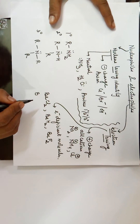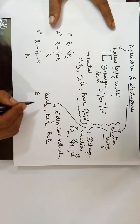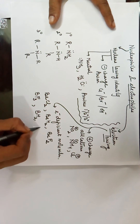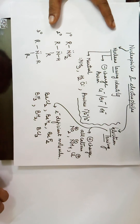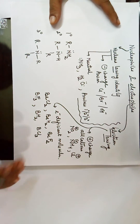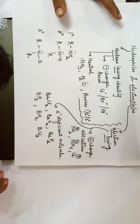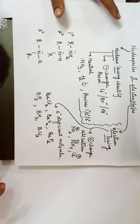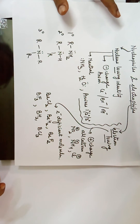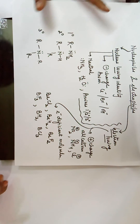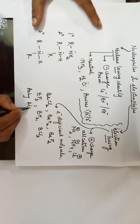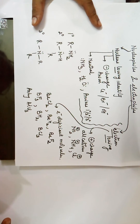Boron has atomic number 5, with three electrons in its outermost shell. It forms three bonds with fluorine, hydrogen, or chlorine. In all such compounds — BF₃, BH₃, BCl₃ — boron achieves a sextet of six electrons: three of its own and three from covalent bonds. It is therefore running short by two electrons to complete the octet, making it electron deficient and an electrophile.